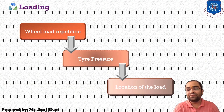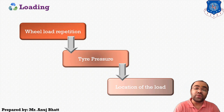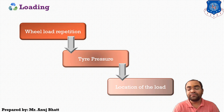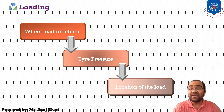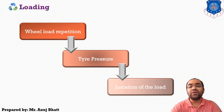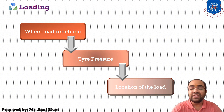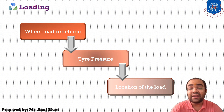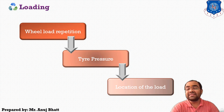The location of the load also affects pavement design. Three major positions of loading are considered for estimating the stress in a slab: interior loading, edge loading, and corner loading. Interior loading produces tensile stresses at the bottom of the slab. Edge loading produces tensile stress at the bottom of the slab parallel to the edge, and another smaller tensile stress at the top of the slab at a right angle to the edge direction. Corner loading produces tensile stresses at the top of the slab parallel to the bisector of the corner angle.